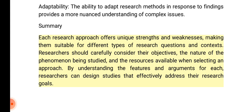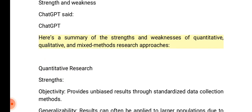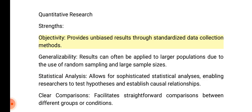Summary: researchers should carefully consider their objectives, the nature of the phenomenon being studied, and the resources available when selecting an approach. By understanding the features and arguments for each, researchers can design studies that effectively address their research goals. Quantitative research strengths: objectivity — provides unbiased results through standardized data collection methods.